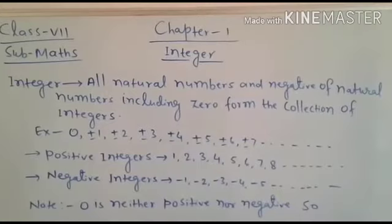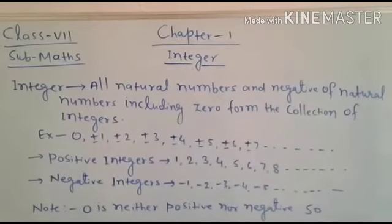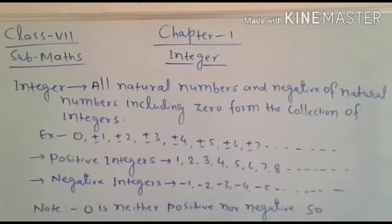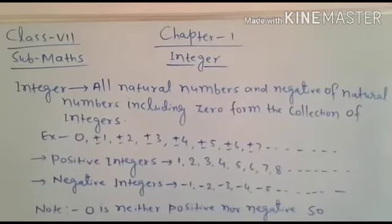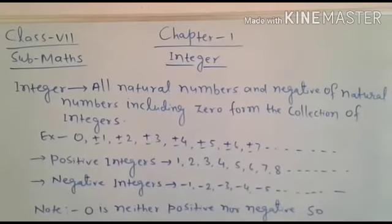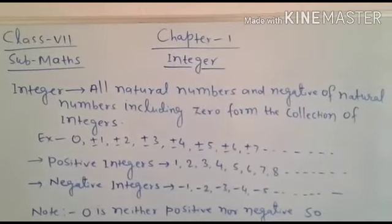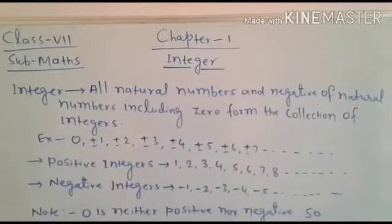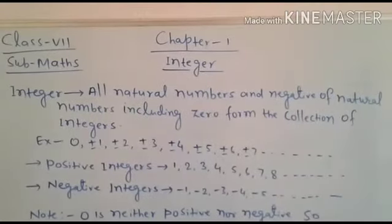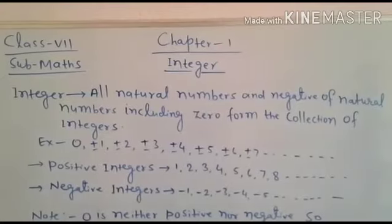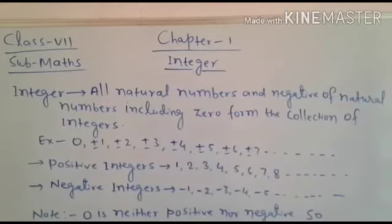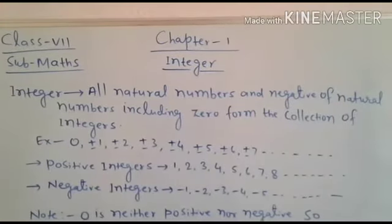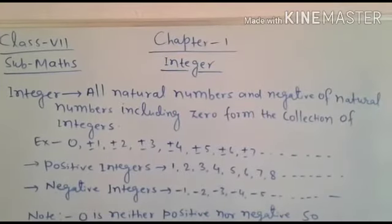And what about whole numbers? Whole number means we have a set of natural numbers, and when we include zero in the set of natural numbers, we get a new set of numbers. That new set of numbers we call whole numbers. So whole numbers are natural numbers including zero.